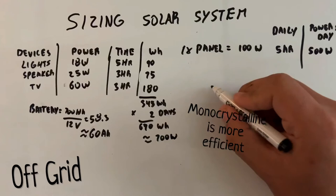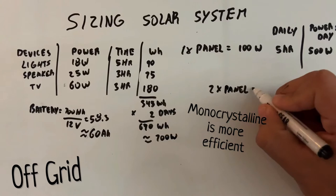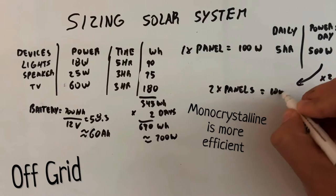Now our system requires 700 watt hours daily. So we're going to need a second panel. So if we use two panels on a daily basis, we will get 500 watts times two, 1000 watts.